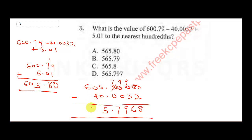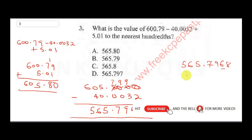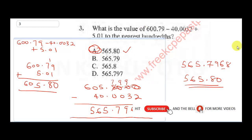The question says find this to the nearest hundredth — that means two decimal places. We approximate the digit 6 in the third decimal place: it rounds up, so the second decimal becomes 8, giving 565.80. Wait — rounding the 6 carries over, making it 565.80. The correct answer is A.